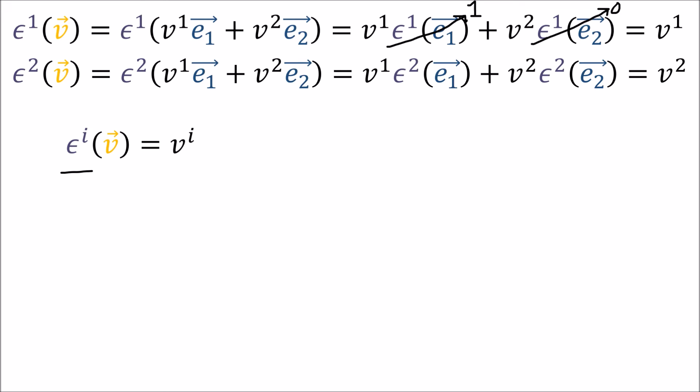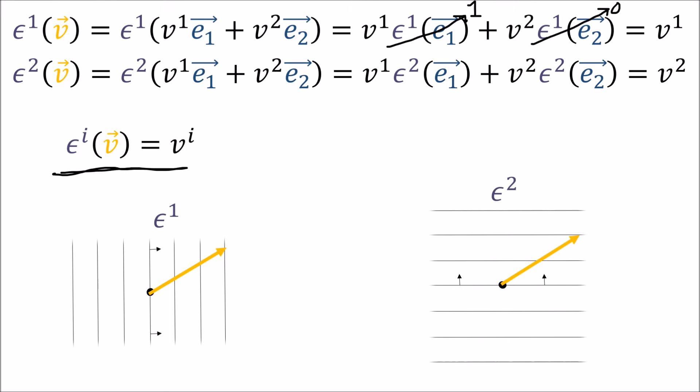Epsilon 1 visually looks like this because it helps us get the first component of v where e₁ is the basis vector that points in this direction. Epsilon 2 looks like this because it helps us get the second component of v where the e₂ basis vector points in this direction. That's what the epsilon covectors look like.